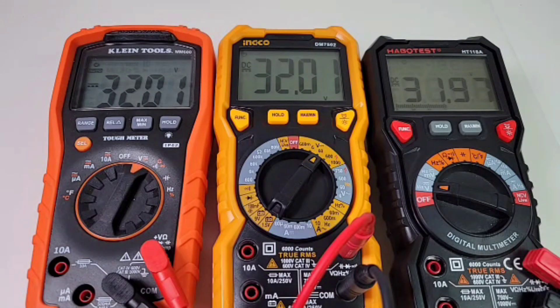Finally, we're going to max things out. So, yes, we are out in max land. 32.01 volts, and check it out. 32.01 for the Klein, 32.01 for the Inco, and 31.97 for the Habotest. So, holy moly cannoli. It is a win-win. We have a tie between the Klein and the Inco. Oh, my God. I was not expecting that. Excellent.